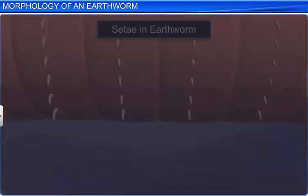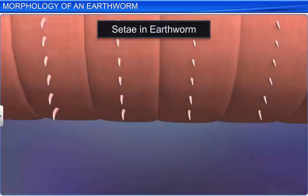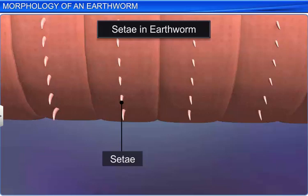The earthworm's body is rough to the touch due to the presence of tiny S-shaped bristles called setae, which are embedded in the epidermal pits. Each segment of the body, except the first, last, and the clitellum, has setae, which help in locomotion.